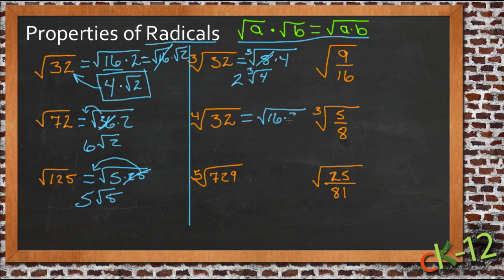We have 16 times 2, and we're looking for the 4th root. The 4th root of 16 is 2, so now we have 2 4th roots of 2 instead of 2 cube roots of 4.